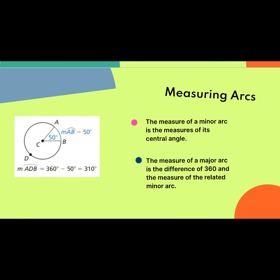Now, when we talk about finding the actual measure of an arc — we know the angle measure, they'll give us that. The measure of a minor arc is the measure of its central angle. So that is really nice — if the central angle is 50 degrees, that means the measure of its arc is also 50 degrees. Pretty easy.